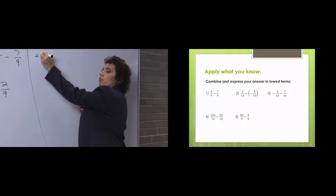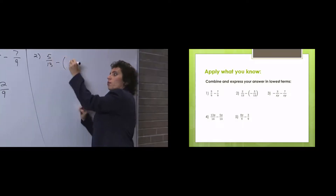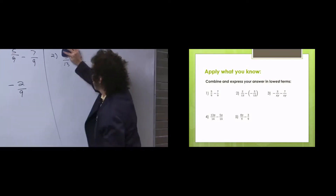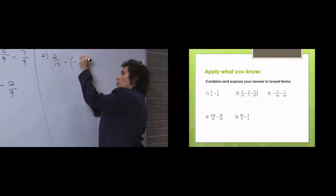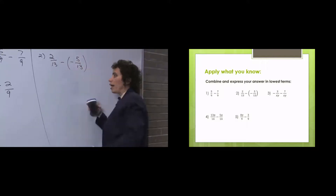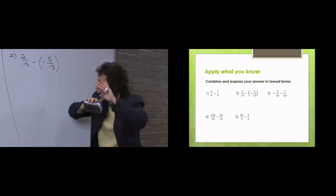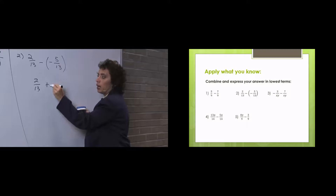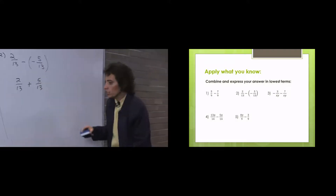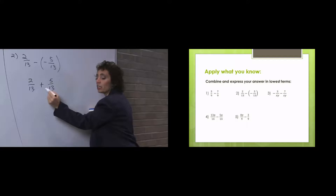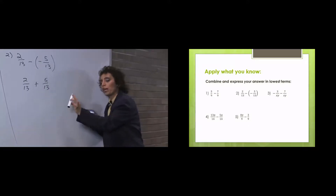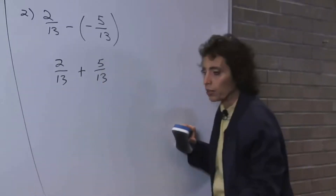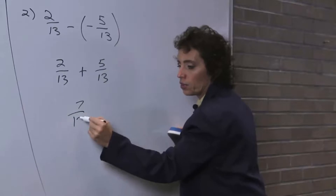Number 2: 2 thirteenths minus a minus 5 thirteenths. Double sign — absolutely no double signs. These two signs become one. The signs are the same, so they become a positive. Now I have this. Check for the LCD — least common denominator. We have a common denominator. So all I have to do is worry about the numerators. I have 2, I have 5, I have 7 thirteenths.